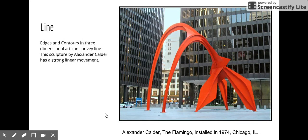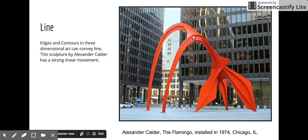Edges and contours in three-dimensional art can also convey line. Here's a sculpture by Alexander Calder, located in Chicago in the loop area. You can see that there are obvious edges — metal sharp edges in the cast iron — that act as lines running through the sculpture.